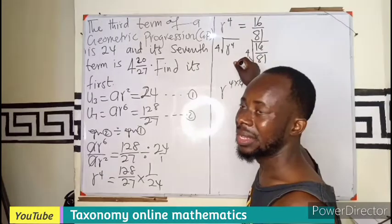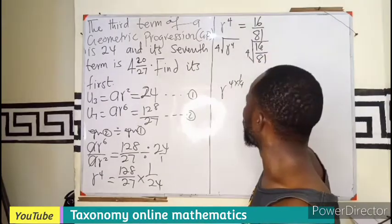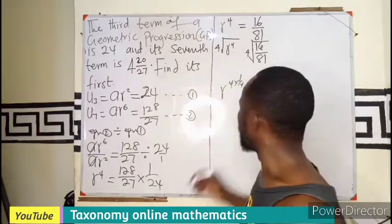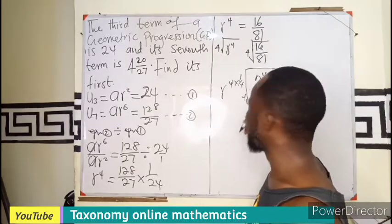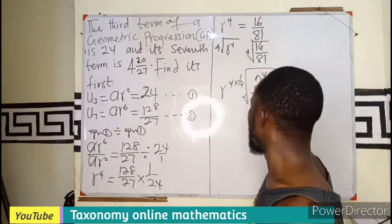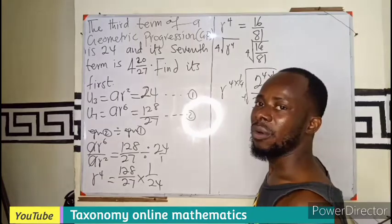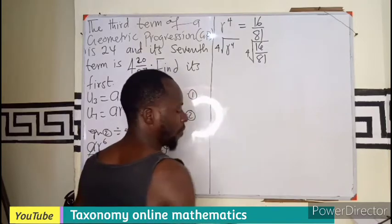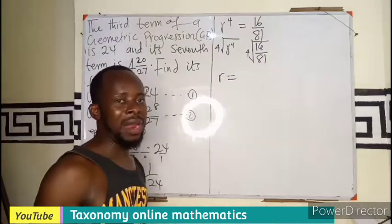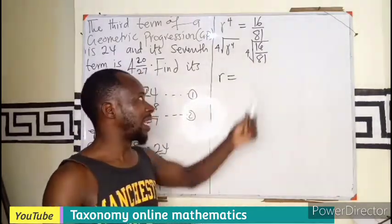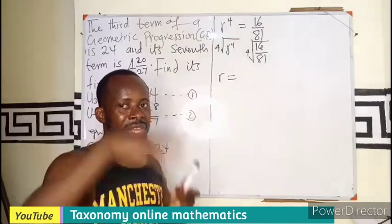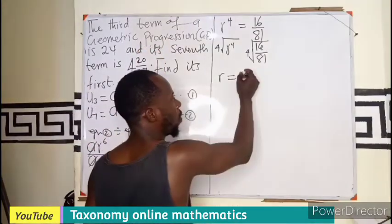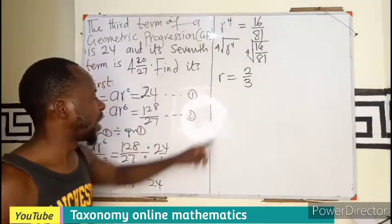We need to find this on the calculator. Or better still, we can change this to become 2⁴ and this to become 3⁴. If I find the 4th root of that, it means it becomes power of 1 over 4 times 1 over 4. If I have a division under set, each of the terms takes the square root. In this case the 4th root. So we have r equals to 2 over 3.